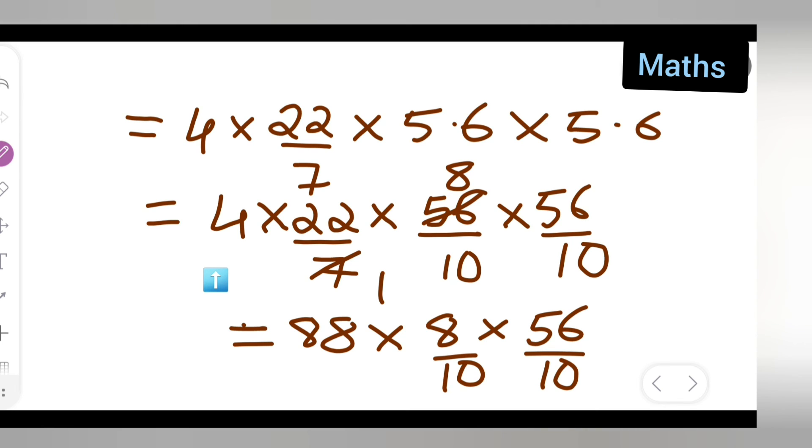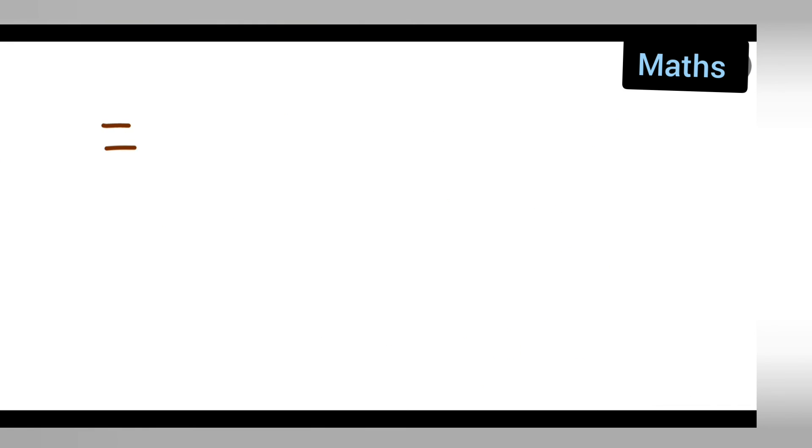Now this will remain. Now what you have to do is multiply this 8, you have to multiply this 8 by 56. So what answer are you going to get? So you will get 39424 upon 100.